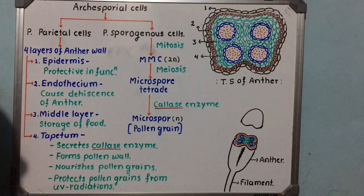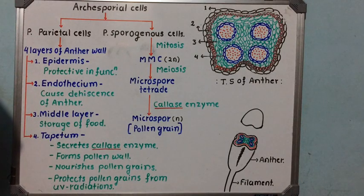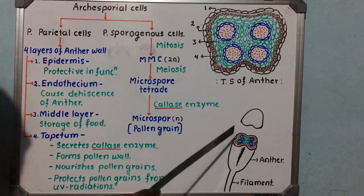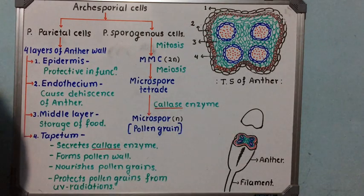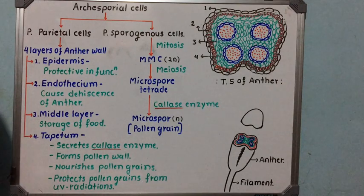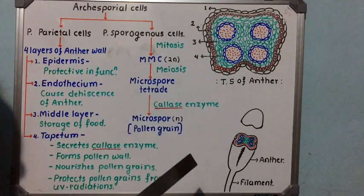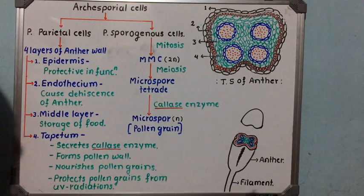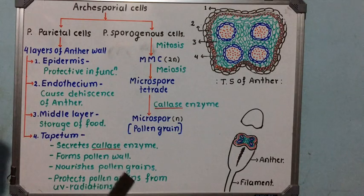Within the microsporangia there are fine powdery structures known as microspores or pollen grains. In this video we are going to study how pollen grains are produced within the pollen chambers. That phenomenon is called microsporogenesis — the process of formation of microspores or pollen grains within the microsporangia or pollen chambers.